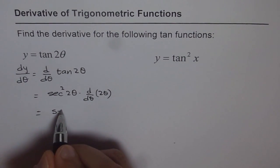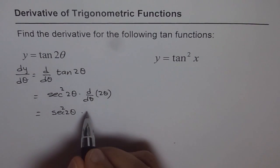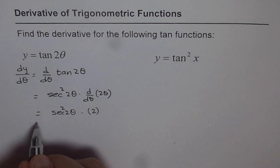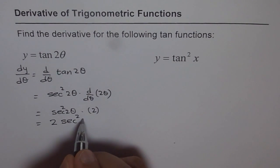Then we get sec² 2θ times the derivative of 2θ, which is 2. So that gives us the answer: 2 sec² 2θ.